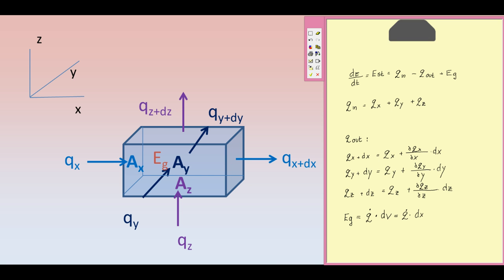These terms amount to the change of the stored thermal energy, expressed as dm — the change of mass — times heat capacity times the rate of temperature change of the differential volume. dm, the differential mass, can be expressed as the product of the density times the differential volume.